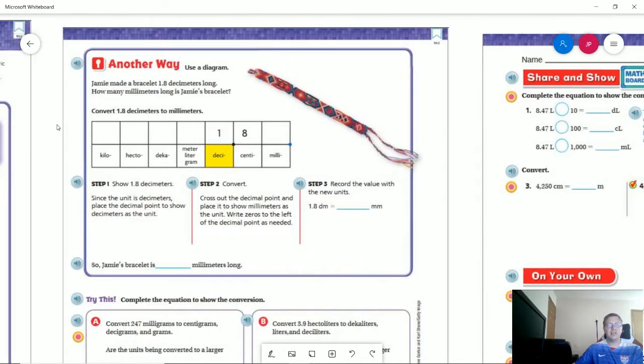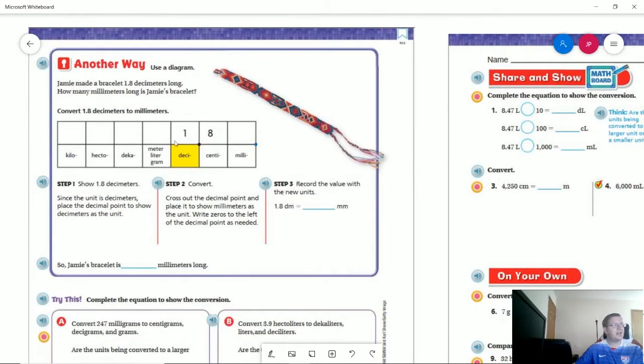So taking a look at the top of the next page, I don't remember if I included this with your packet. We have 1.8 decimeters and we want to figure out how many millimeters. So we have a one for this and then an eight here. So if we put a zero here then we would end up with 180 millimeters. So what they want us to do is to go ahead and cross out the decimal point and place it to show millimeters as the unit. So we would move this over two spots and in doing so we would write a zero up here to fill that in.